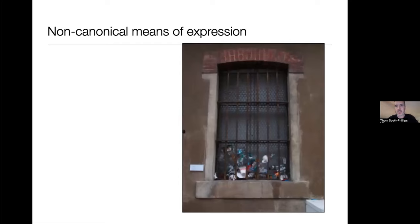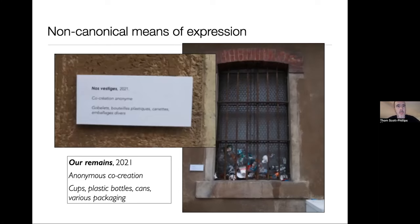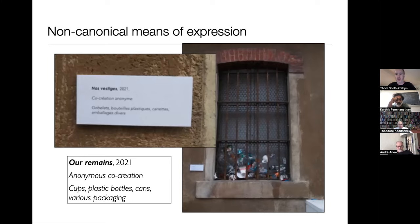Here's a real-world example — not strictly hidden authorship, but certainly non-canonical. This was spotted by the daughter of my co-author Christophe Heinz. This is a window somewhere in France, on the ground floor, with a metal grill placed in front to avoid vandalism. People have started placing various bits of litter and rubbish inside the metal grill. But somebody has decided to be clever and creative — they've pasted a little museum-style plaque on the wall. It says: R remains 2021, anonymous co-creation, cups, plastic bottles, cans, various packaging. So it's presenting this window as if it were an artifact in a museum, asking funny and humorous questions about who is the author, what could they possibly mean, and so on.